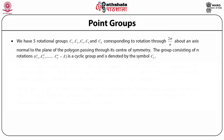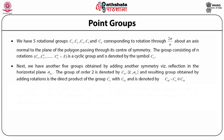The group Cₙ consists of n rotations: Cₙ, Cₙ², Cₙ³, ... up to Cₙⁿ, which equals the identity E. This forms a cyclic group denoted by the symbol Cₙ, representing a rotation by 2π/n about an axis normal to the plane of the polygon. Its elements are simply Cₙ, Cₙ², ..., Cₙⁿ = E.